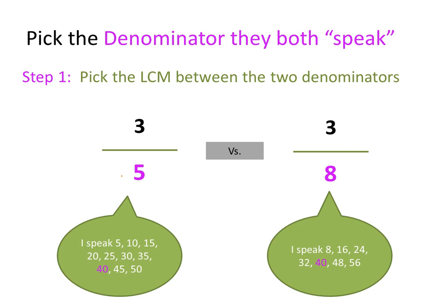What's a denominator? It's the one in the lower position. What's an LCM, a least common multiple? Multiples — you're going up by that number each leap. So 5 times 1, 5 times 2, 5 times 3, and so on. His multiples are down here — what the 5 can speak: 5, 10, 15, 20, 25, 30, 35, 40, 45, 50.